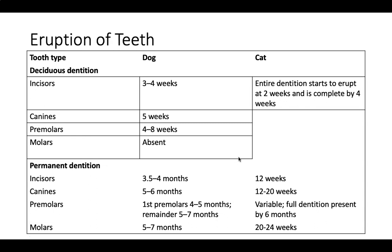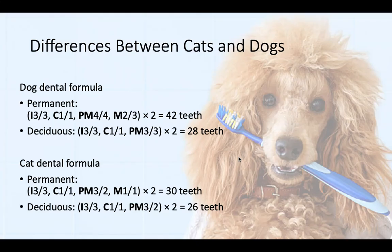For permanent adult teeth: adult incisors erupt at three and a half to four months for dogs, 12 weeks for cats. Canines erupt at five to six months for dogs and 12 to 20 weeks for cats. Premolars: the first at four to five months, the rest at five to seven months. Cat full dentition is present by six months. Dog molars erupt at five to seven months. Generally, most adult teeth have come in by six months of age. If an animal is spayed after six months with retained baby teeth, the vet will likely extract them.